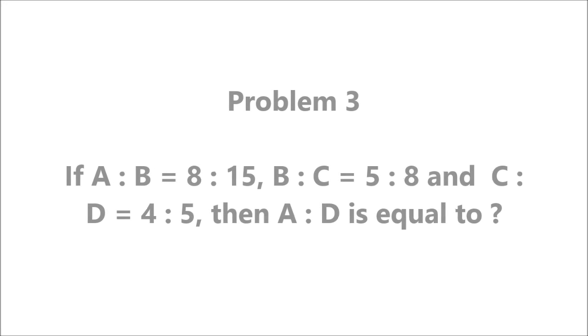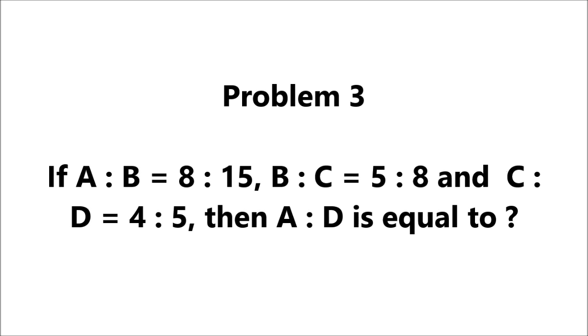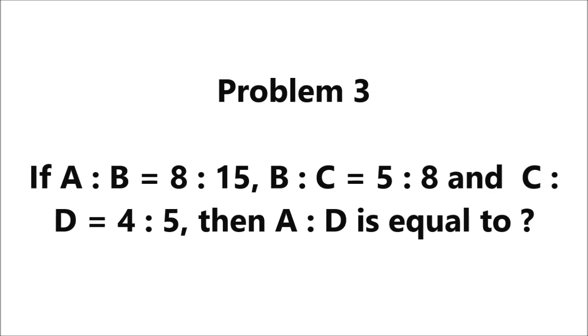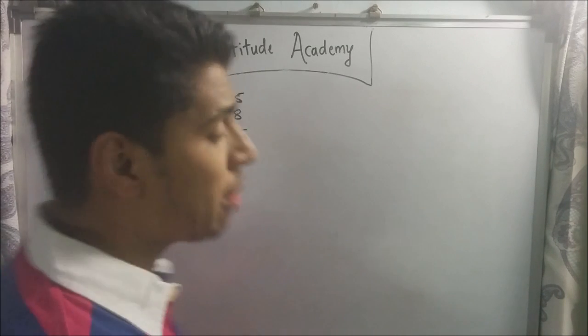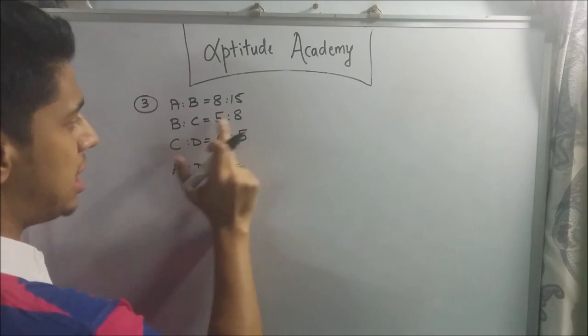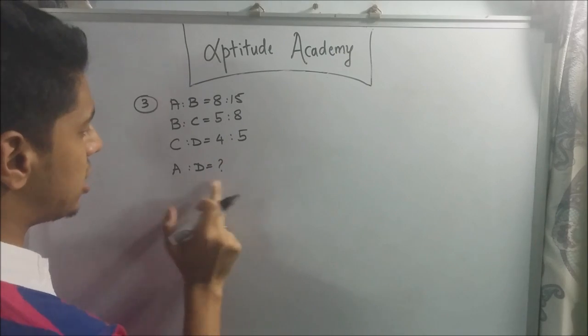Let's go to problem number 3. Problem 3. If a is to b is equal to 8 is to 15, b is to c is equal to 5 is to 8, and c is to d is equal to 4 is to 5, then a is to d is equal to? Alright, now for problem 3, they've said that a is to b is equal to 8 is to 15, b is to c is equal to 5 is to 8, and c is to d is equal to 4 is to 5. What is a is to d?